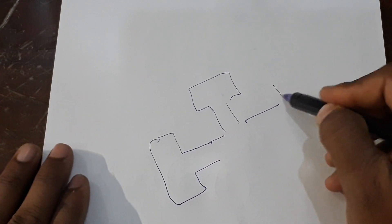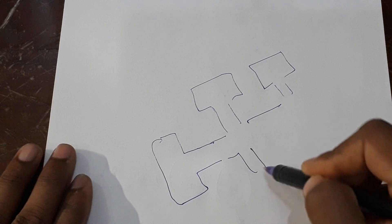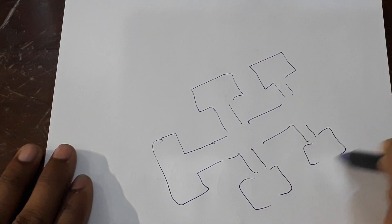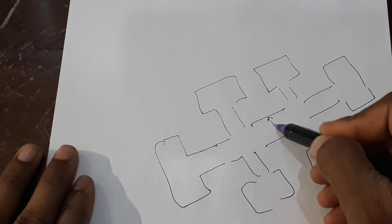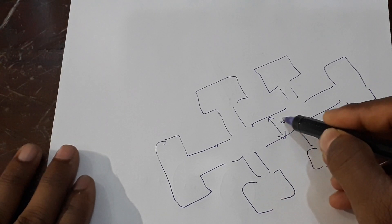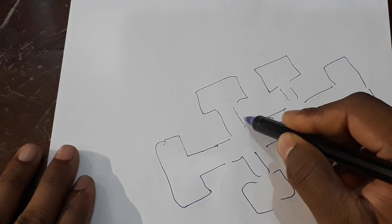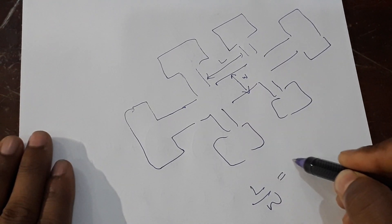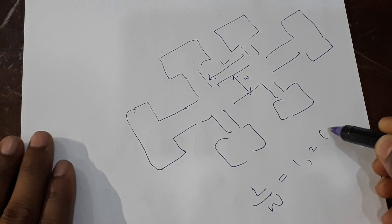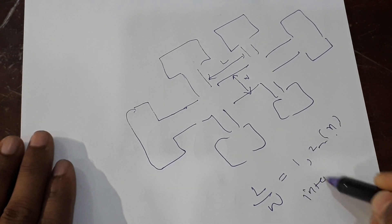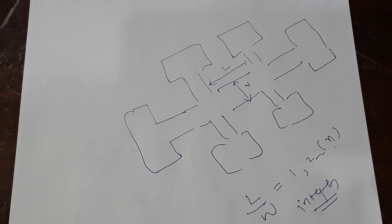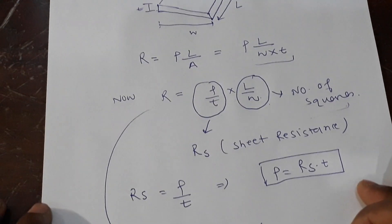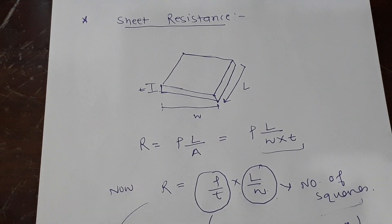Let me make a Hall bar. So what I'm drawing for you is a Hall bar which is like this. If you see this, this is your width and this is your length. So people design in such a way that L/W comes to one or two or some integer number, which makes the calculations very easy. So in two-dimensional materials or very thin materials, there exists a quantity like resistivity—it's called sheet resistance.